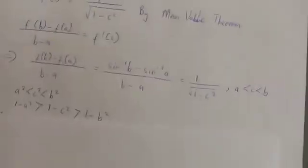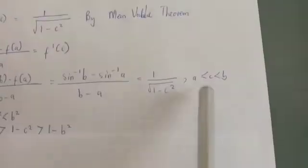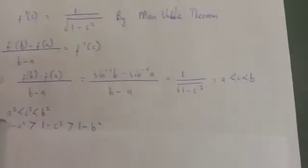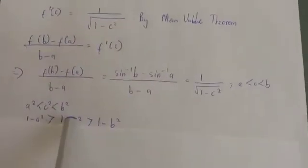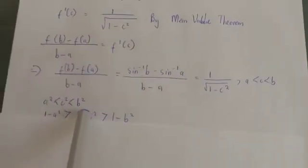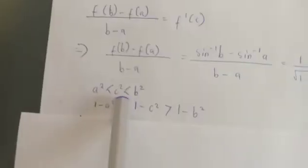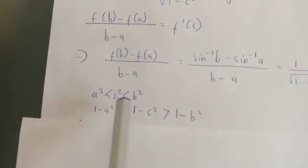This statement implies that, since a < c < b, squaring gives us a² < c² < b².